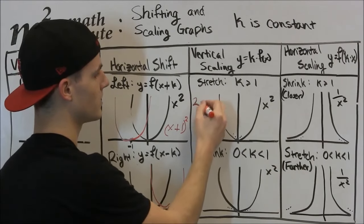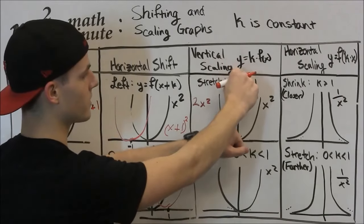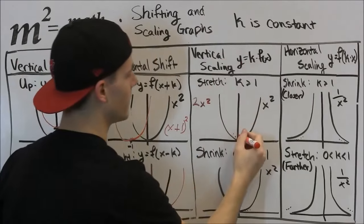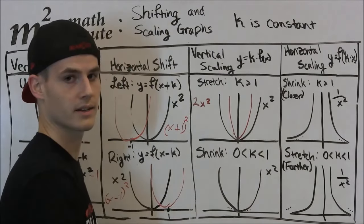So if we had 2 times x squared, we're going to stretch this vertically. So we're going to take the function, we're going to go like this, we're going to pull it up like that. So this is what 2x squared is going to look like.